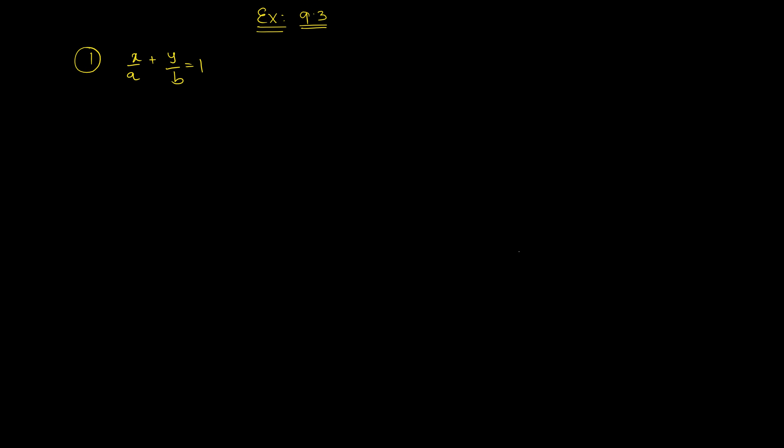This equation contains two arbitrary constants a and b. First of all, you need to see how many arbitrary constants are present. Whenever you form a differential equation for any curve, first identify how many arbitrary constants it has. Since there are two arbitrary constants, we will differentiate it twice, and then eliminate the arbitrary constants from the equations.